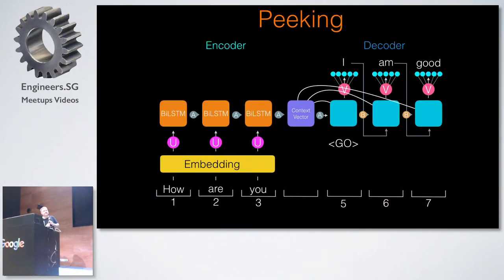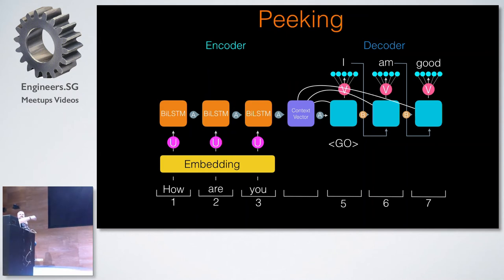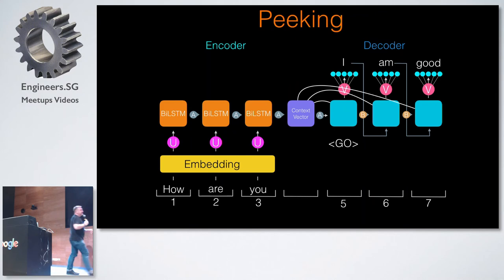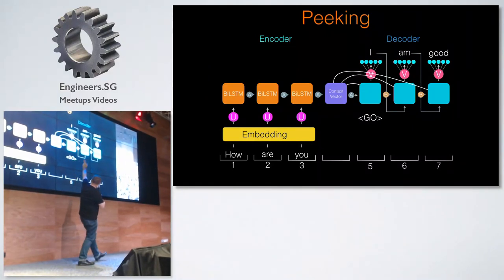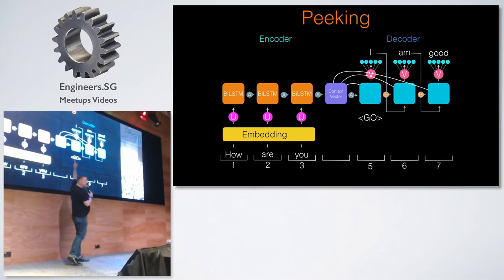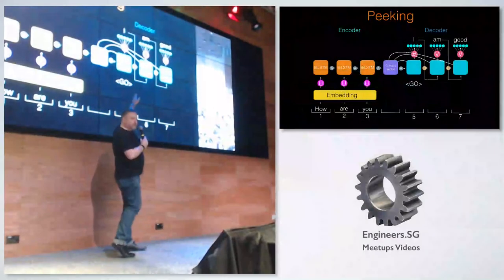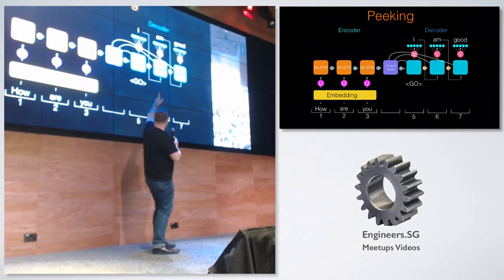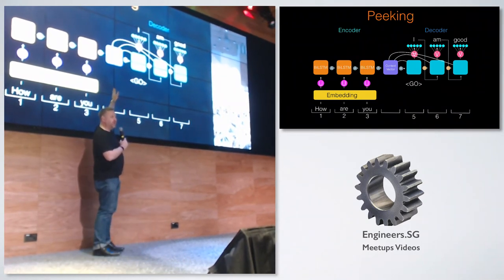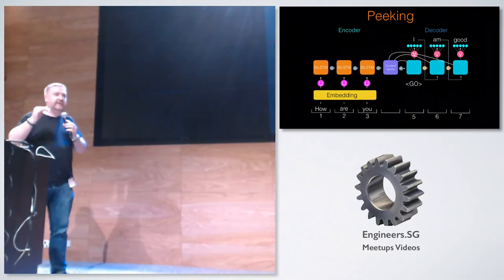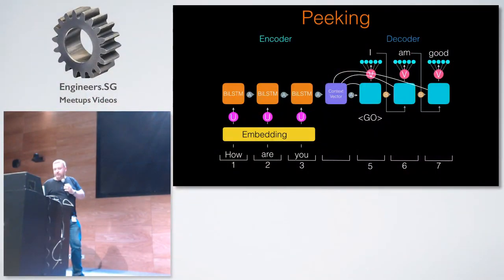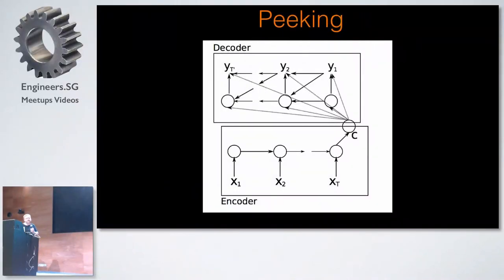The next advanced technique is peeking. Normally we feed the hidden state of the context vector straight through every step of the next RNN/LSTM, but that context vector gets changed each time it goes through the weights. With peeking, we take the version that's being changed but we also give it the original version that came out of the encoder, so it can sort of check itself. This allows it to get much better accuracy as well.